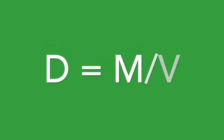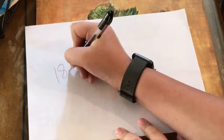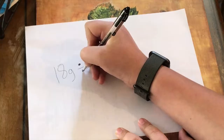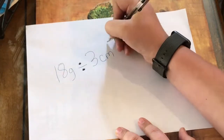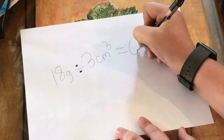To find the density of an object, use this simple formula. The density is the mass divided by the volume. If the mass of an object is 18 grams and the volume is 3 centimeters cubed, the density would be 6 grams over centimeters cubed.